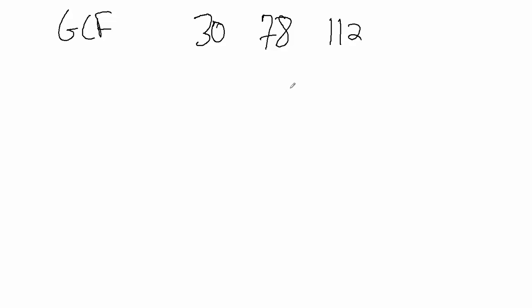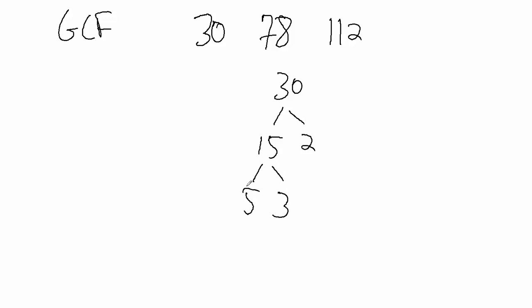So 30 splits up into 15 times 2. Then 15 splits up into 5 times 3. So 30 cannot be split up anymore because 5, 3, and 2 are all prime numbers.